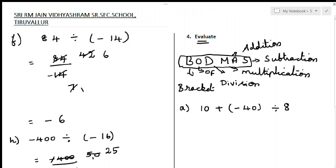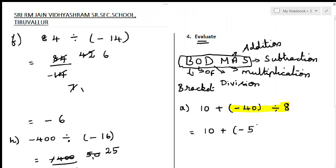Your first sum is 10 plus minus 40 divided by 8. As per BODMAS, we do division first: minus 40 divided by 8. Since they have different signs, the answer is minus 5. So we now have 10 minus 5. Since they have different signs, we subtract and keep the greater number's sign, giving us positive 5. Your answer is 5.